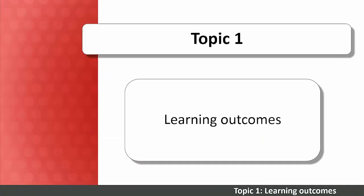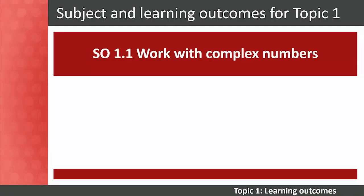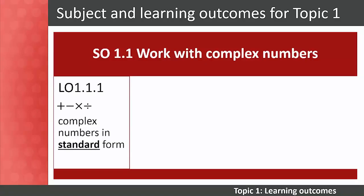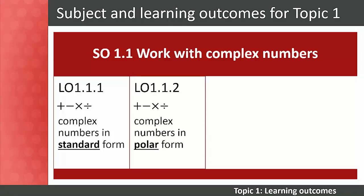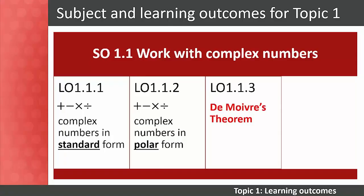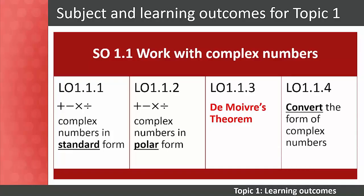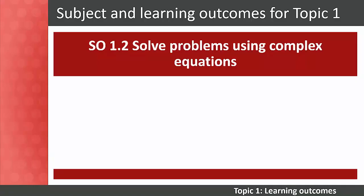By the end of Subject Outcome 1.1, your students should be able to add, subtract, multiply and divide complex numbers in standard form including i notation, multiply and divide complex numbers in polar form, apply De Moivre's theorem, and convert the form of complex numbers where needed to support the performance of complex tasks. De Moivre's theorem is new content in Level 4.